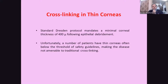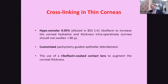For cross-linking in thin corneas, the standard Dresden protocol mandates a minimum corneal thickness of 400 microns following epithelial removal. In practice, many patients have thin corneas. If we consider that epithelial removal accounts for approximately 50 microns, the residual stromal thickness may be very thin. We can use hypo-osmolar riboflavin at 0.05% concentration to increase corneal hydration and thickness intraoperatively, with a maximum allowable increase of 80 microns. We can also use customized pachymeter-guided epithelial removal.